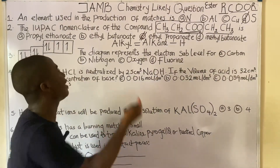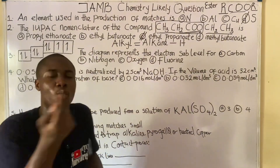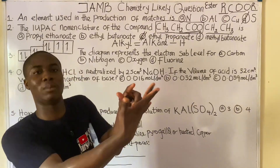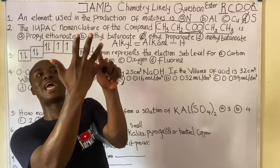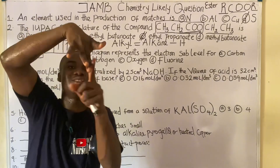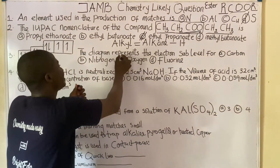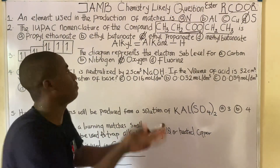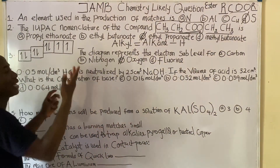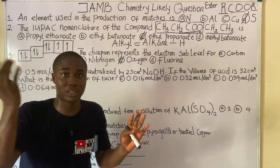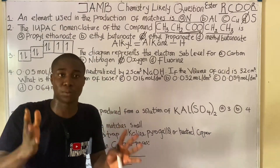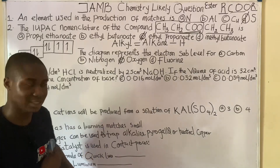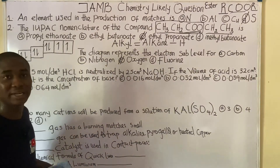You count the elements in the periodic table: hydrogen, helium, lithium, beryllium, boron, carbon, nitrogen, oxygen — oxygen is number eight. So oxygen is the answer to this question. Count the electrons, count the elements in the periodic table, and get your answer. The answer is option C.